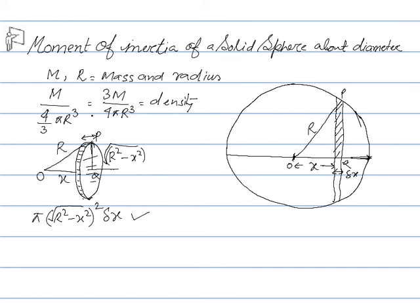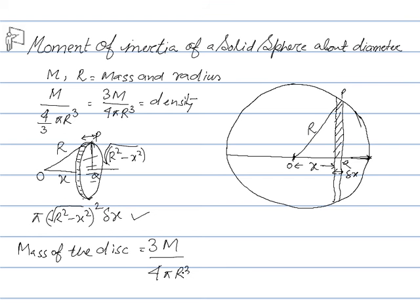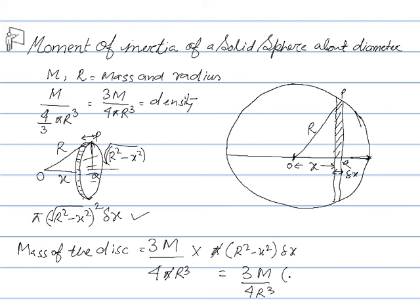The mass of this disk equals density times volume. So the mass of the elementary disk is (3m / 4πr³) times π(r²−x²)δx. The π cancels, giving mass = (3m / 4r³)(r²−x²)δx.